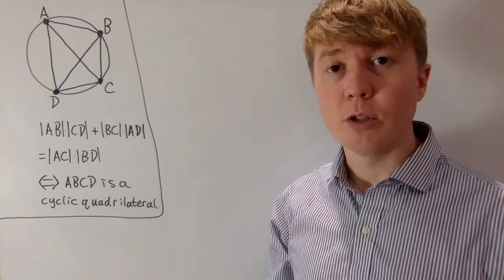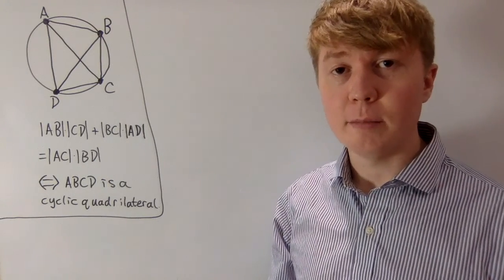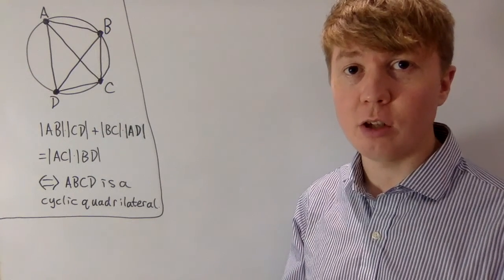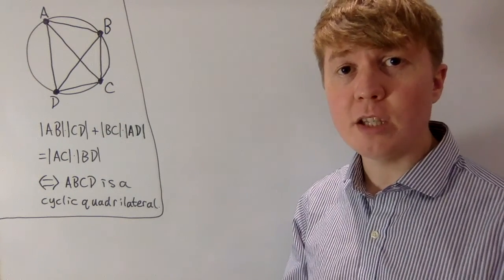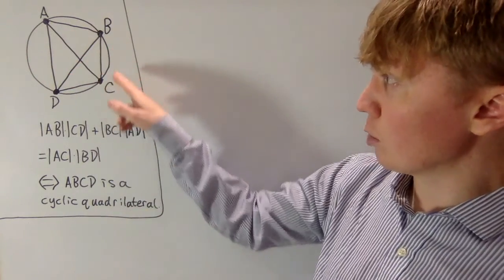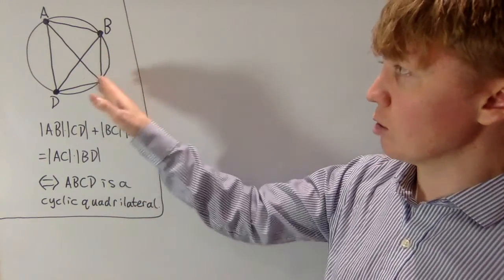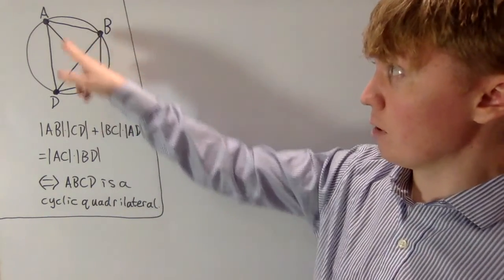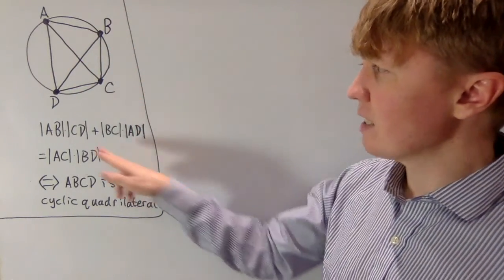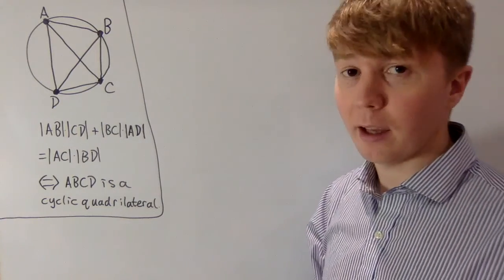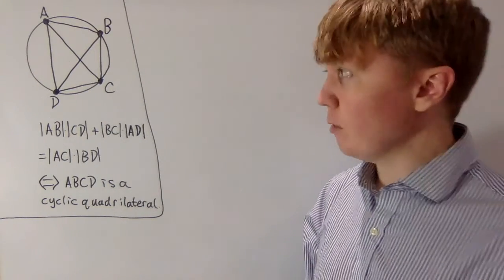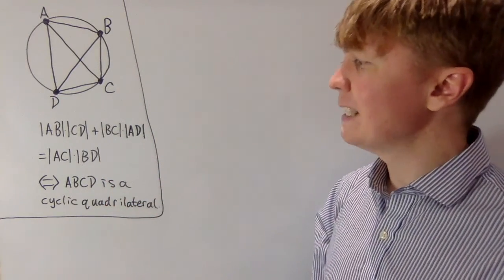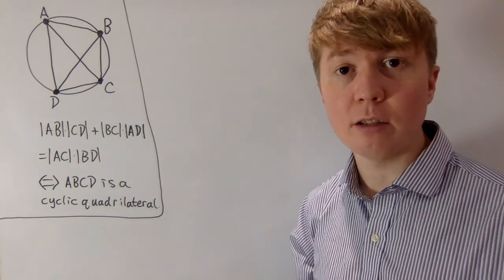We're going to prove Ptolemy's theorem using complex numbers. This is a really beautiful application of complex numbers to prove a classical geometry result. Ptolemy's theorem tells us that if we have a cyclic quadrilateral — one whose vertices all lie on a circle — then the lengths of the sides and diagonals satisfy a nice equation. And the converse is also true: if a quadrilateral's sides and diagonals satisfy this equation, then it must be a cyclic quadrilateral.